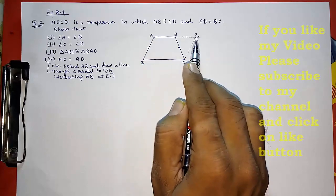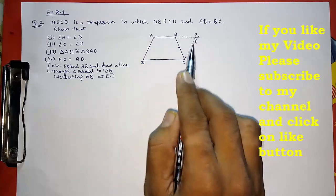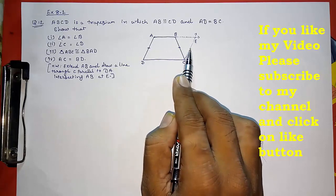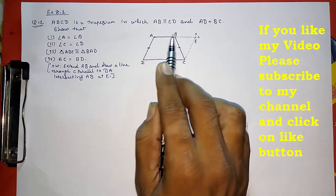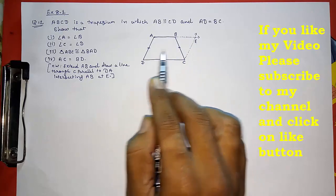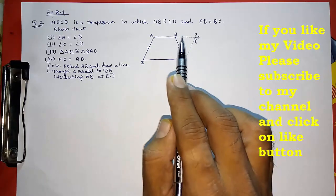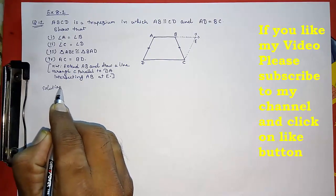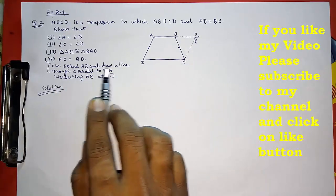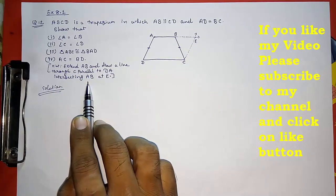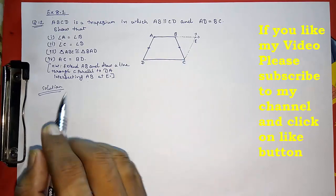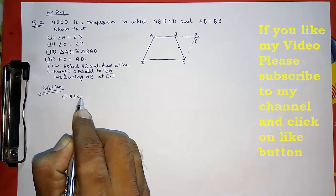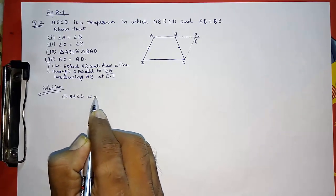So here we get AECD as a parallelogram, because AB is parallel to CD (given) and we constructed CE parallel to AD. Both pairs of opposite sides are parallel, so it forms a parallelogram. For the solution, first write the construction, then state that quadrilateral AECD is a parallelogram.